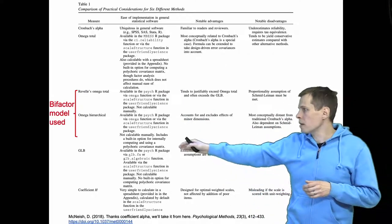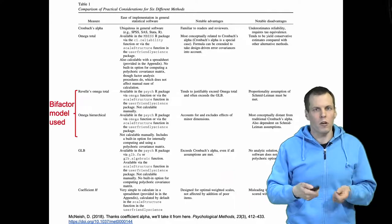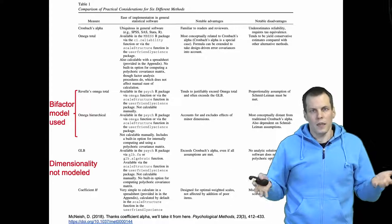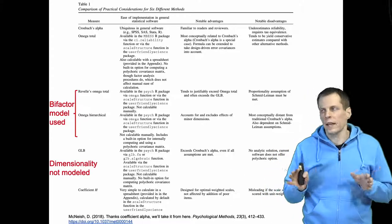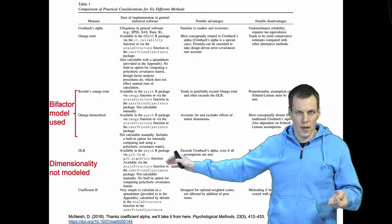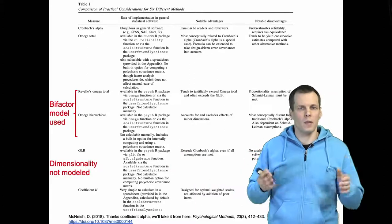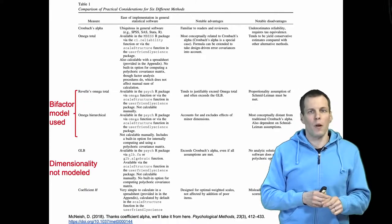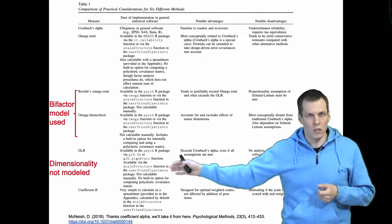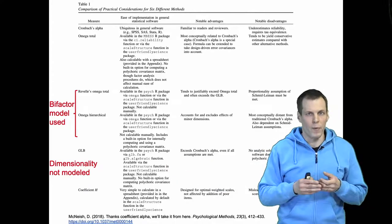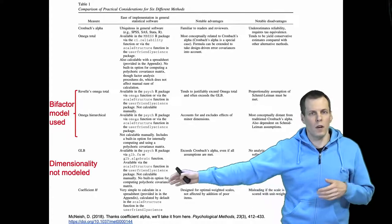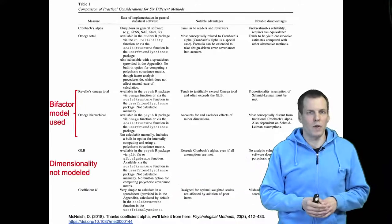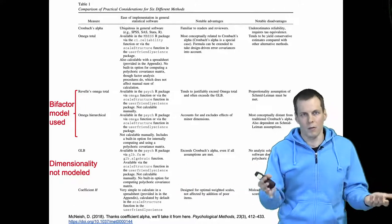The greatest lower bound (GLB) is a special coefficient that does not make assumptions about dimensionality — it's a worst-case estimate of reliability that almost certainly underestimates reliability. For example, using the GLB for errors-in-variables regression analysis would be a bad idea. However, calculating a worst-case estimate can be useful: if the GLB gives you 80% reliability, you know your reliability is probably pretty good.